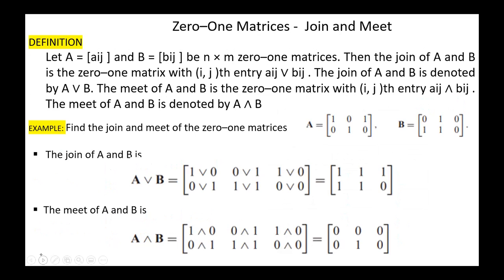Next, join and meet of 0-1 matrices. Let matrix A equals Aij and B equals Bij be N by M 0-1 matrices. The join of A and B is the 0-1 matrix with the IJ-th entry equal to Aij OR Bij, denoted A join B. The meet of A and B is the 0-1 matrix with IJ-th entry equal to Aij AND Bij, denoted A meet B.